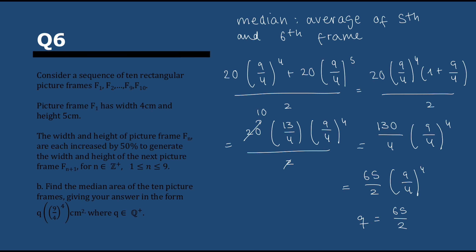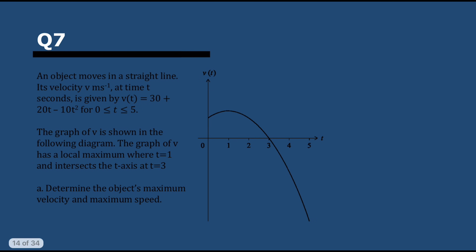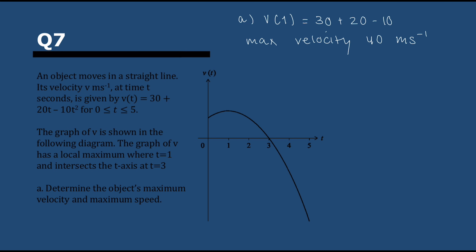Question 7 — kinematics. An object moves in a straight line and its velocity is given by a formula. When asked for the maximum velocity — remembering velocity is positive — there's a maximum at t = 1, and substituting gives max velocity = 40. For maximum speed, it doesn't matter if it's positive or negative. The largest absolute value on the graph is at t = 5, even though it's negative, giving a maximum speed of 120.